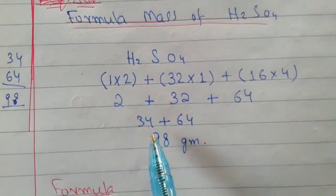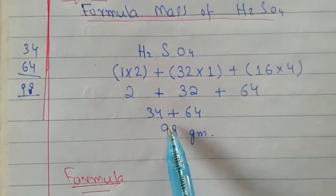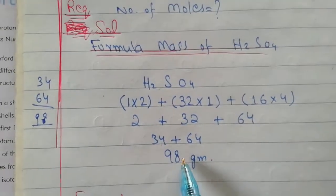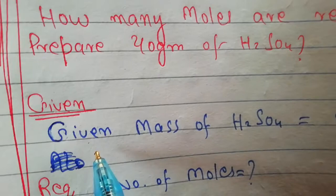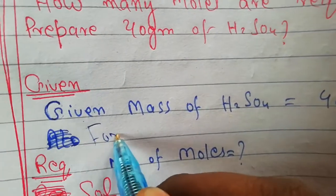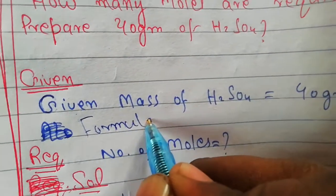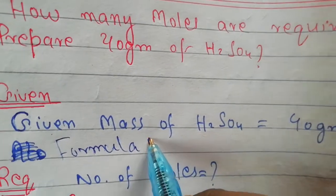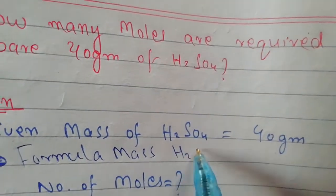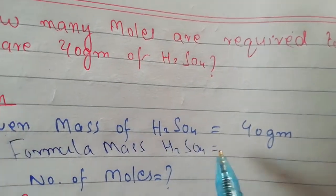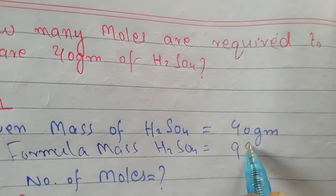2 plus 32 gets 34, plus 64 gets 98 grams. Yes, the formula mass is 98 grams. The formula mass of sulfuric acid H₂SO₄ is 98 grams.